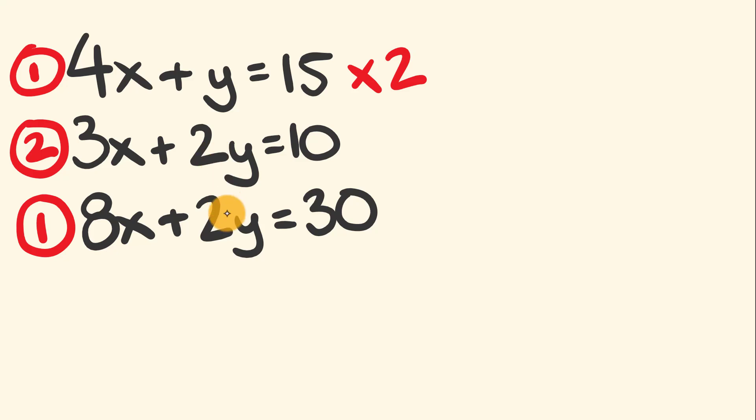Now we're going to take one equation from the other. We're going to eliminate it. Looking at the variables for x, we can see that 8x is bigger than 3x. We're going to take equation 1 and subtract equation 2. Let's eliminate.